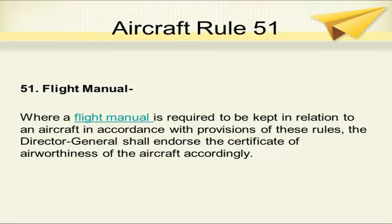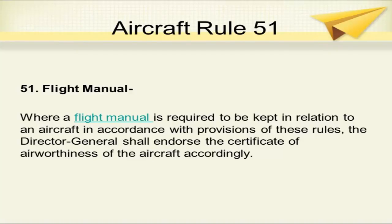Aircraft Rule 51 covers the flight manual. Where a flight manual is required to be kept in relation to an aircraft in accordance with the provisions of these rules, the Director General shall endorse the certificate of airworthiness accordingly. The requirement for a flight manual on board is endorsed on the CoA, and the flight manual becomes a part of the certificate of airworthiness.